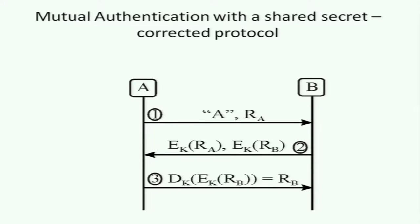To fix the protocol, instead of sending R_B as the challenge in plaintext, B encrypts his challenge: E_K(R_B). A is then challenged to decrypt it and send back R_B. If you try the previous parallel session attack, it won't work. However, be careful — there might be another attack. Security protocols are extremely subtle; this is one of the most difficult topics in this course.